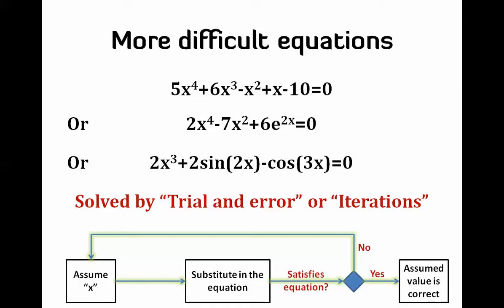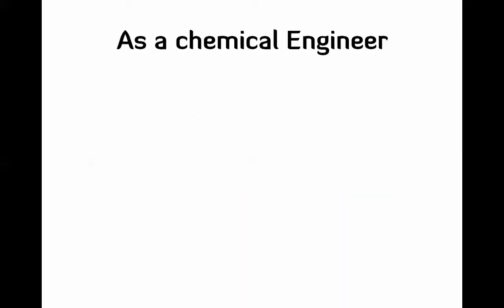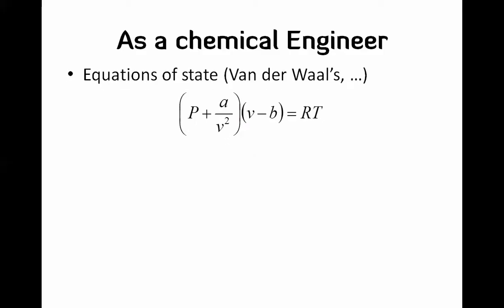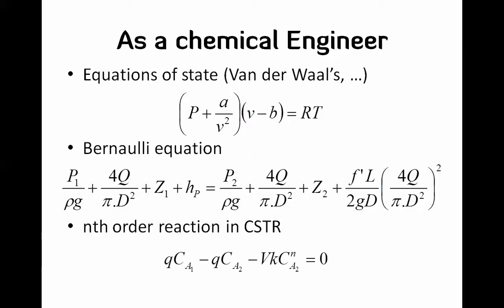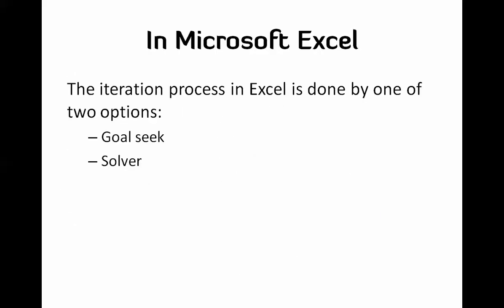This is a very long process that takes a long time if done manually. Before we see how Excel does this, let's look at some real engineering equation examples: one is the van der Waals equation of state, which is a third-order polynomial; another is the Bernoulli equation, a fifth-order polynomial in diameter d; and CSTR reactions of nth order can also produce algebraic equations needing iterative solutions.